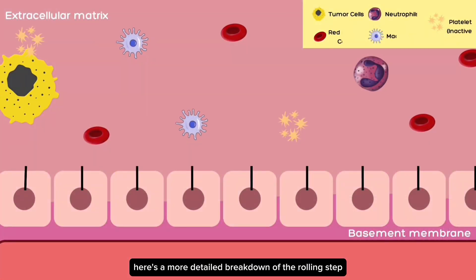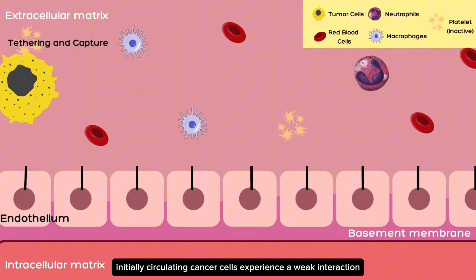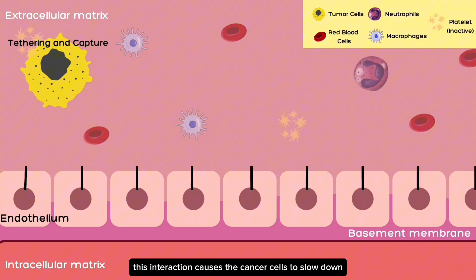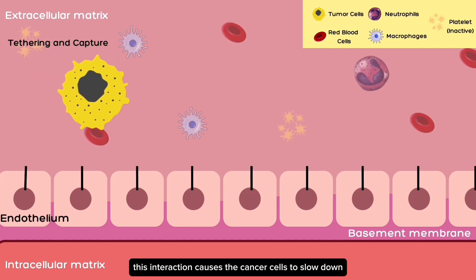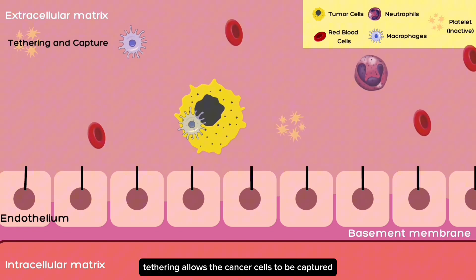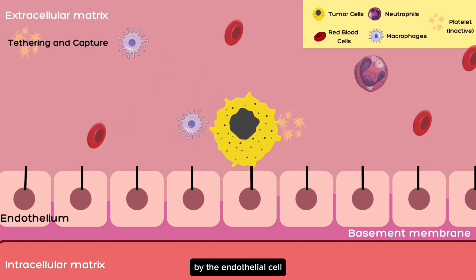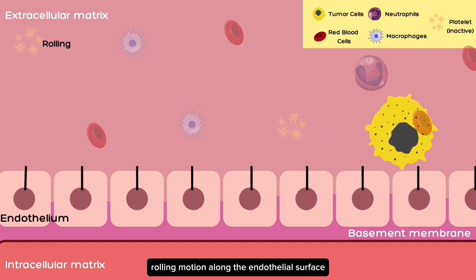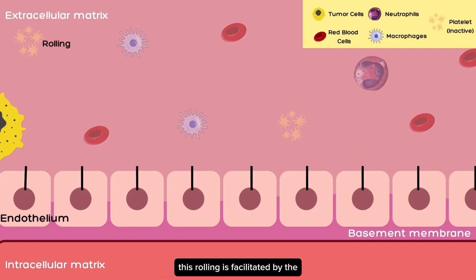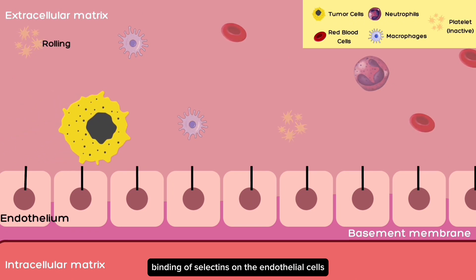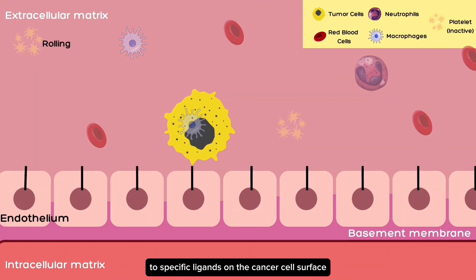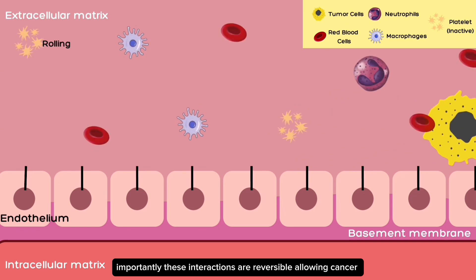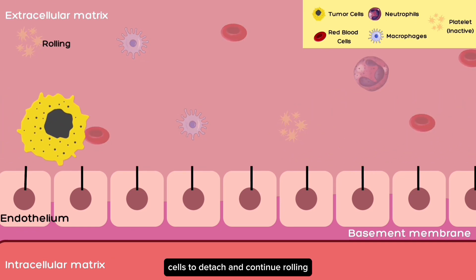Here is a more detailed breakdown of the rolling step. Initially, circulating cancer cells experience a weak interaction with selectins on the endothelial cell surface. This interaction causes the cancer cells to slow down, a process known as tethering. Tethering allows the cancer cells to be captured by the endothelial cell. Once tethered, cancer cells undergo a rolling motion along the endothelial surface, facilitated by the binding of selectins to specific ligands on the cancer cell surface. Importantly, these interactions are reversible, allowing cancer cells to detach and continue rolling.